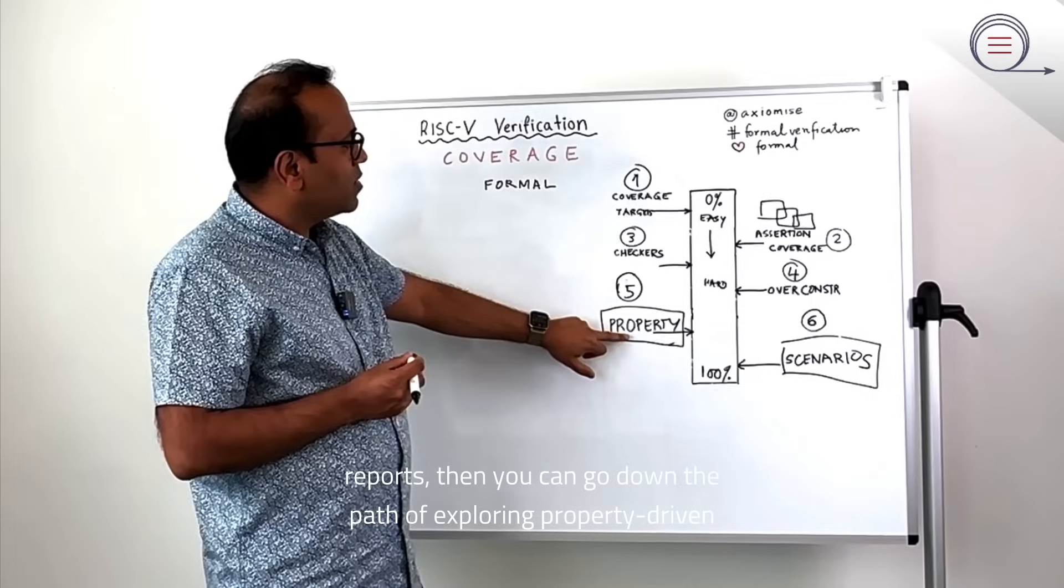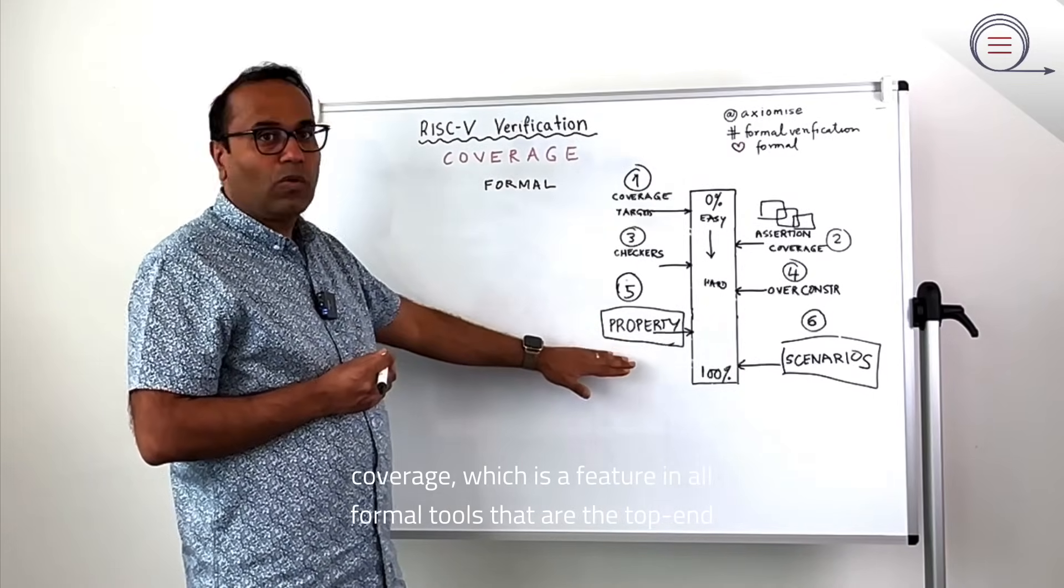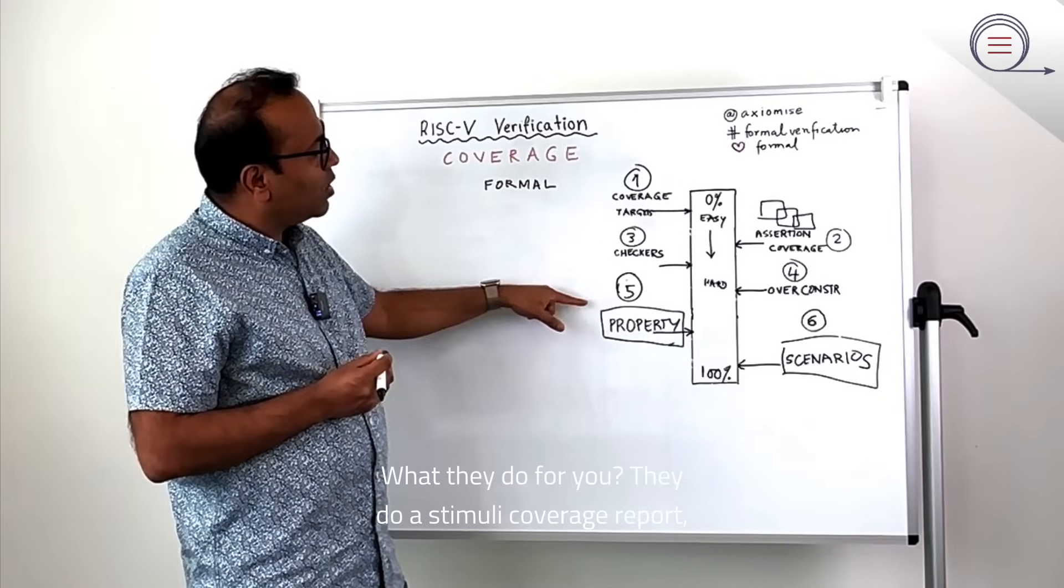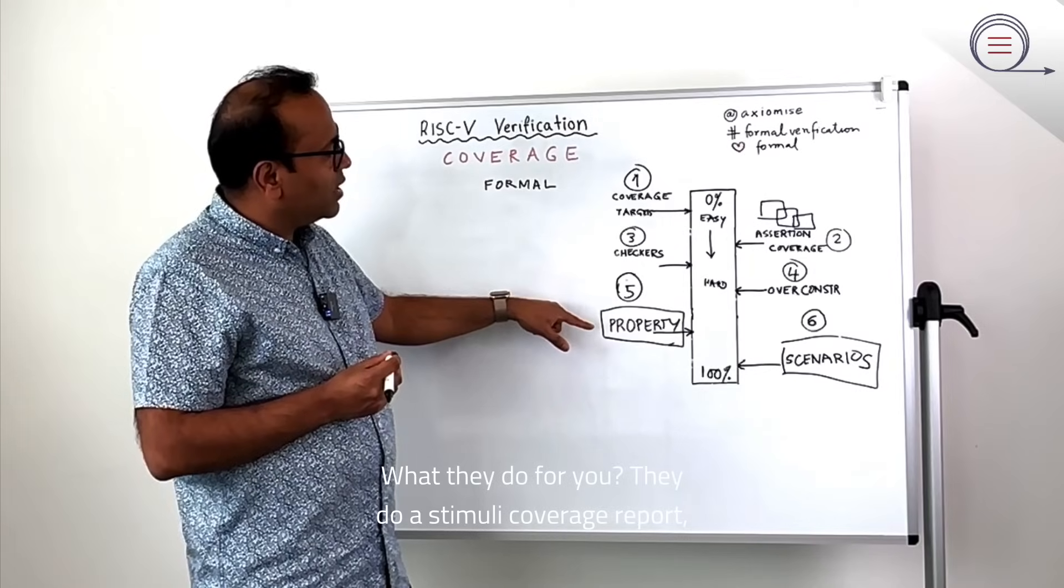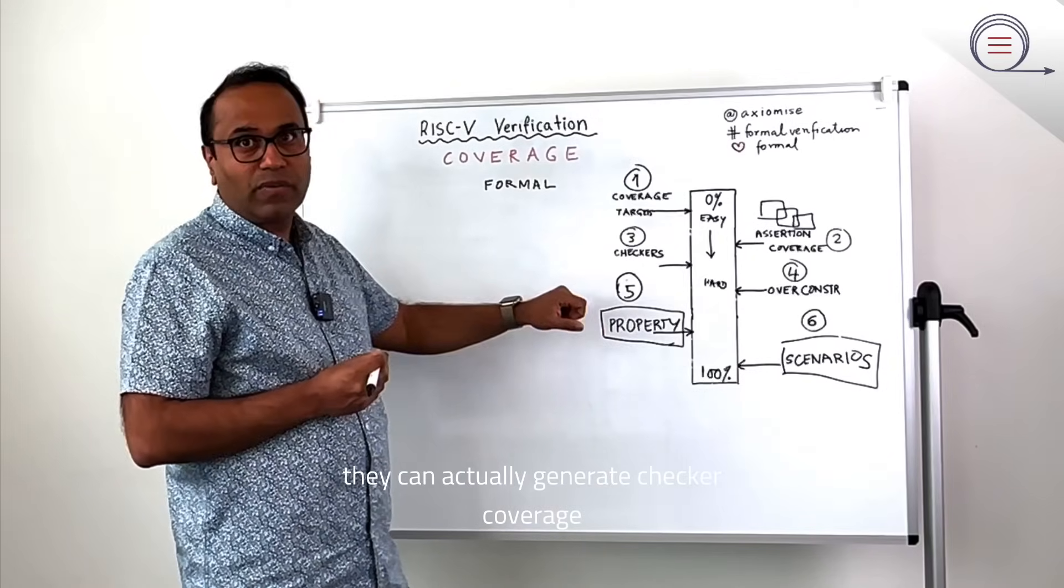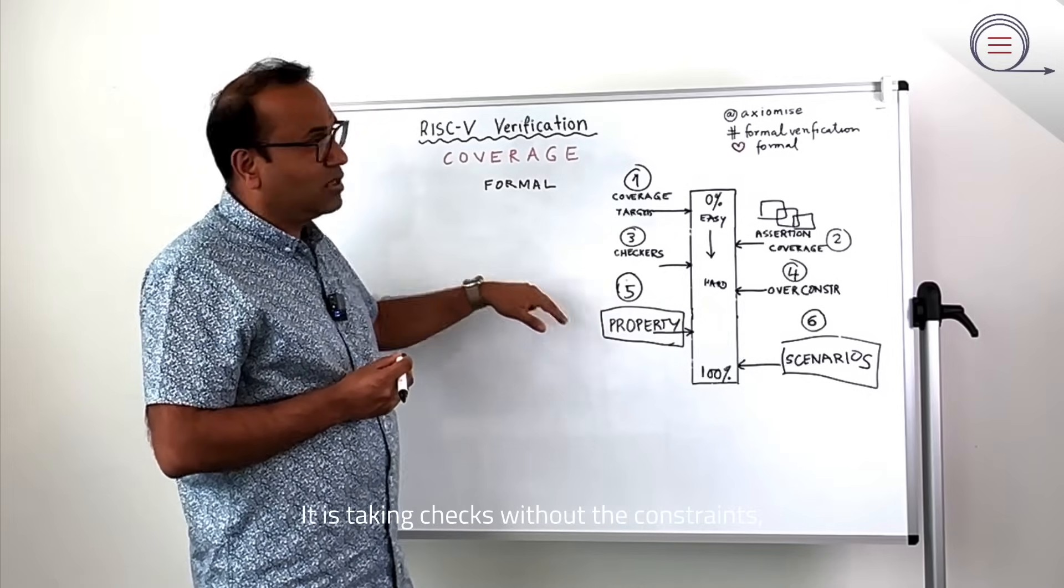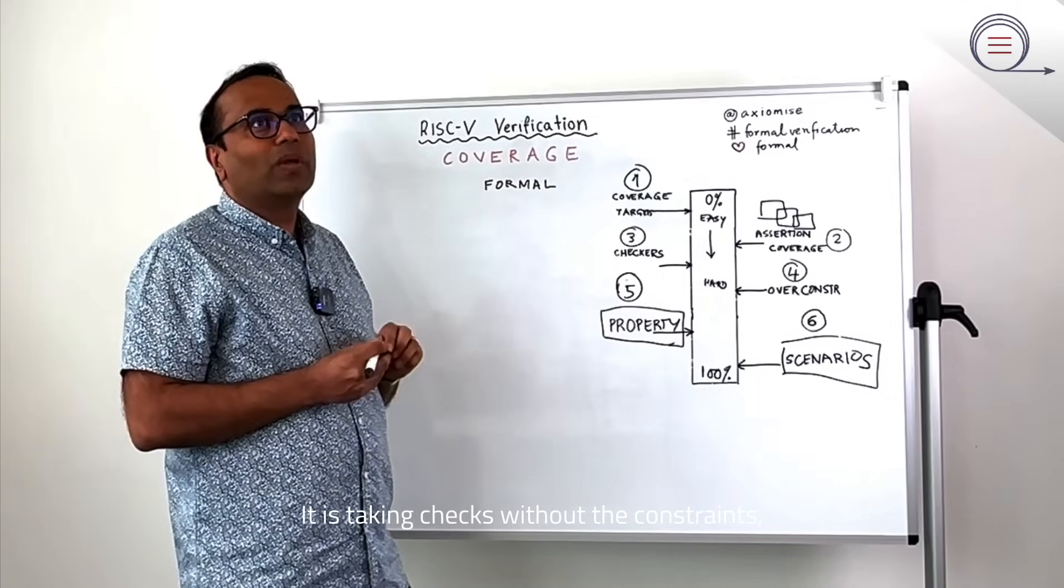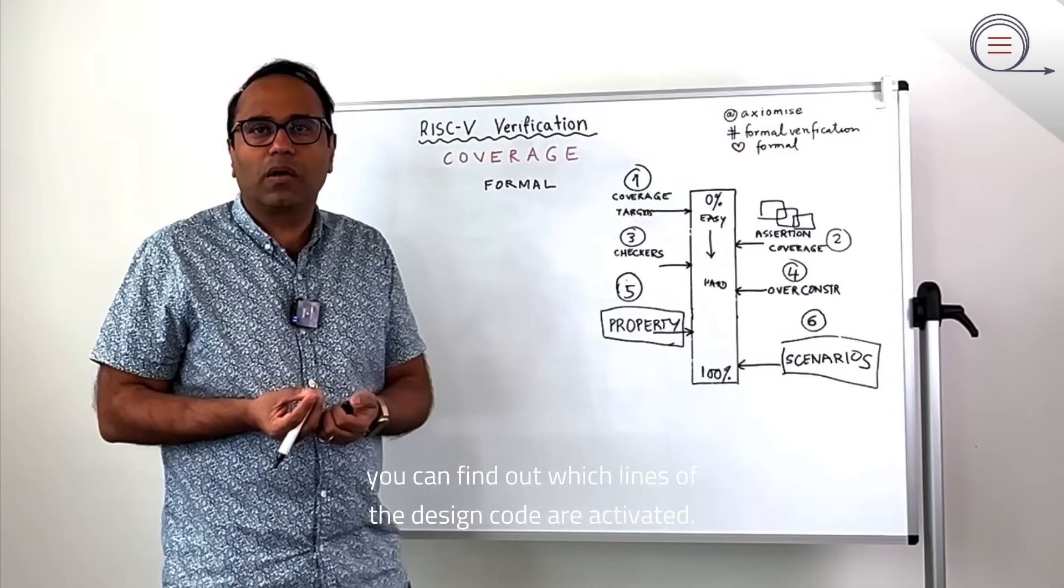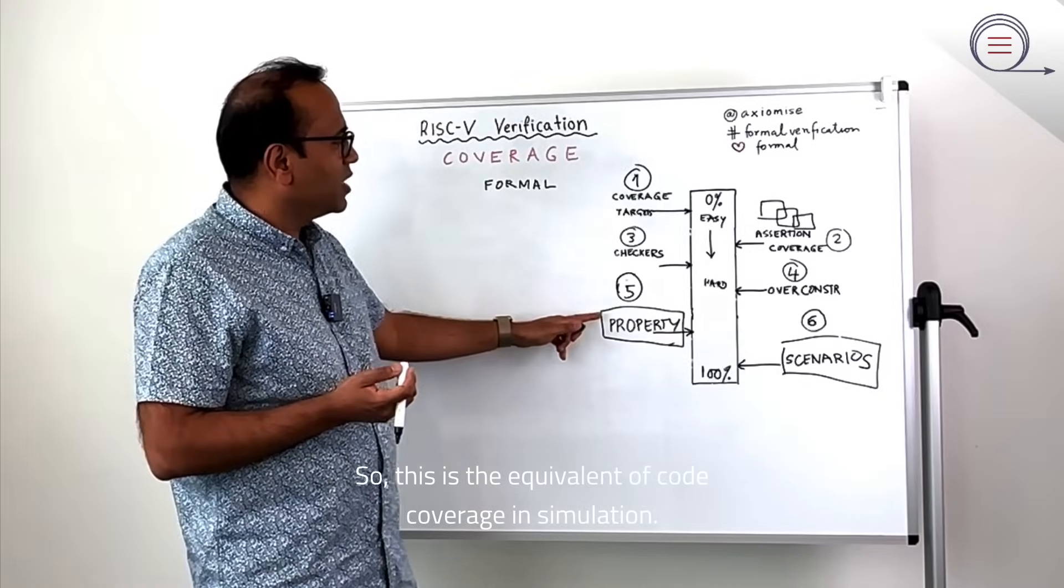Property driven coverage is a feature in all formal tools that are the top end of the game. And what they do for you is they do a stimuli coverage report. They can actually generate checker coverage and mutation coverage. Stimuli coverage checks without the constraints, you can find out which lines of the design code are activated. Can you hit them? This is the equivalent of code coverage in simulation.